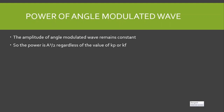What about the power of an angle modulated wave? In an angle modulated wave, the instantaneous frequency and phase vary with time, but the amplitude remains constant. If the amplitude is A, then the power is equal to A squared divided by 2, regardless of the values of kp or kf.